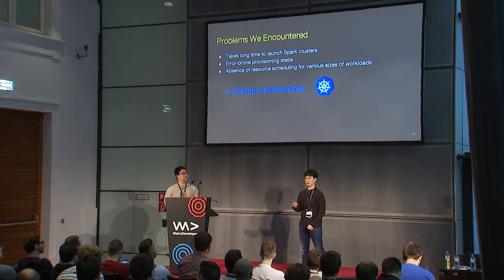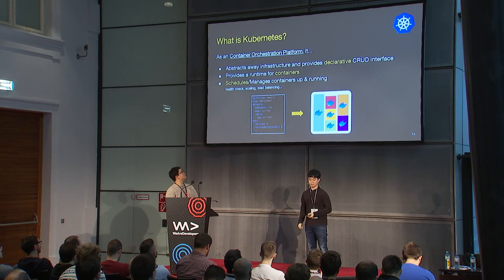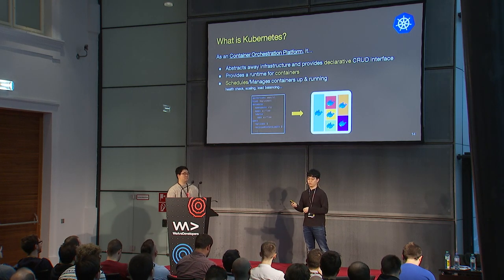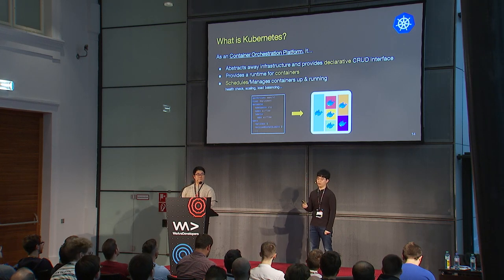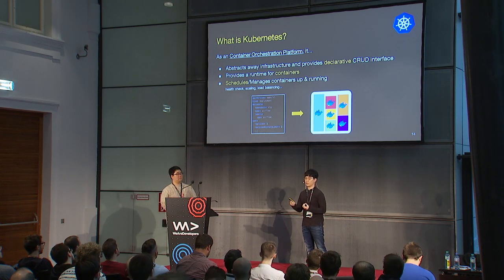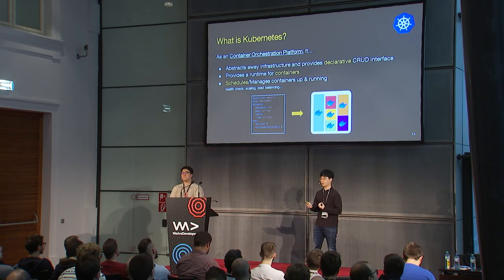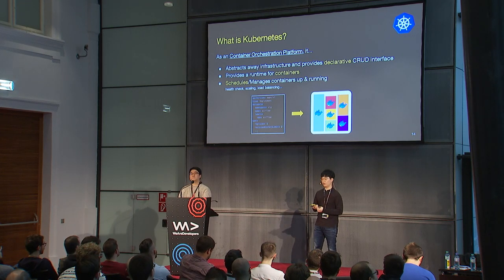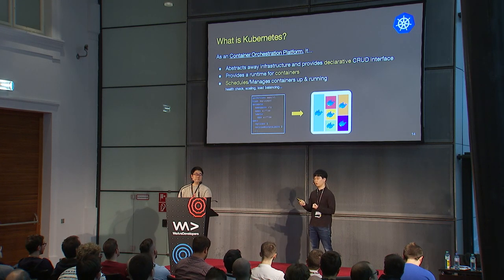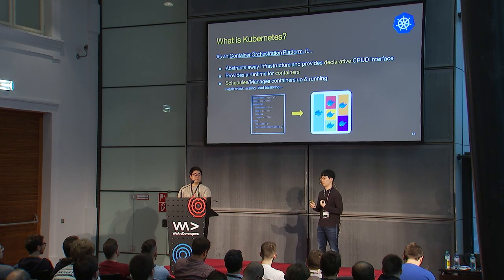That's where we decided to give Kubernetes a try. Kubernetes is an open-source container orchestration platform. It provides a wide range of functions for containerized applications, such as an abstracted layer for deployment, container runtime, resource scheduling, and health checking for containers. The key question is: how can we utilize Kubernetes to deal with our problems? Let's discuss what it helps us with and how we can leverage its features.